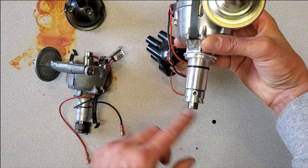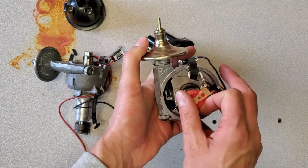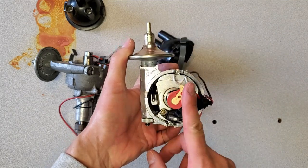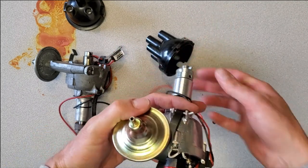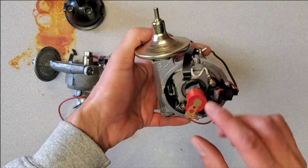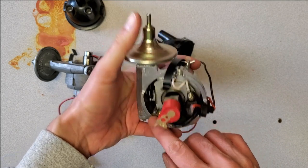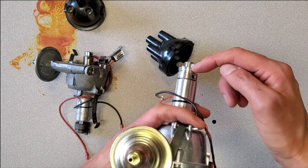Sometimes they fit these correctly and sometimes they have these units 180 degrees around. When you go to fit this to the car, this would be the standard firing position for cylinder number one. Sometimes they'll have them 180 degrees out, so you'll find you're actually firing cylinder number four instead of number one. A lot of times I'll have to take these apart, spin these around, and put them back together again.